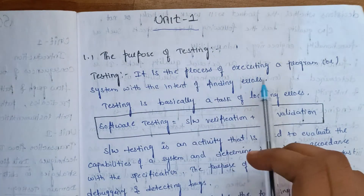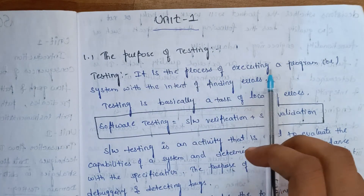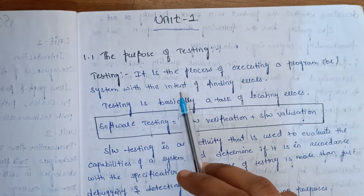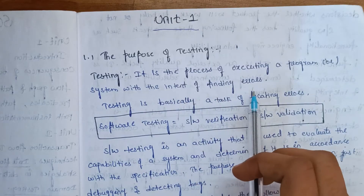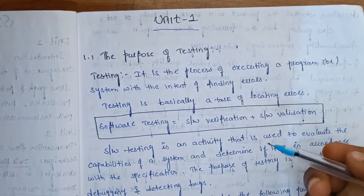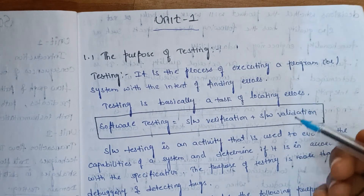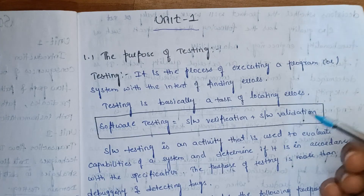The definition is important: it is a process of executing a program and system with the intent of finding errors. Simply put, it is a process of executing a program and finding errors.